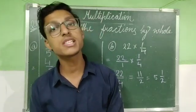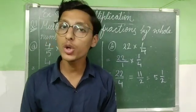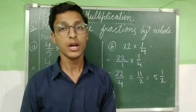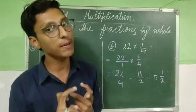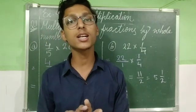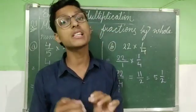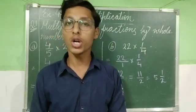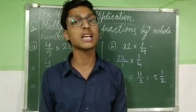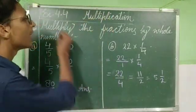If that answer is in proper fraction, it must be in simplest form. If it is an improper fraction, we will first convert it into simplest form and then convert it into mixed fraction as well. Answer kabhi bhi hamara improper mein ya jo simplest nahi hota, aisa fractions mein nahi hona chahiye. Let's start question number one: multiply the fractions by whole numbers.